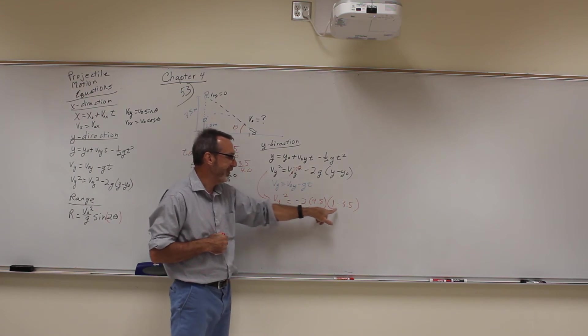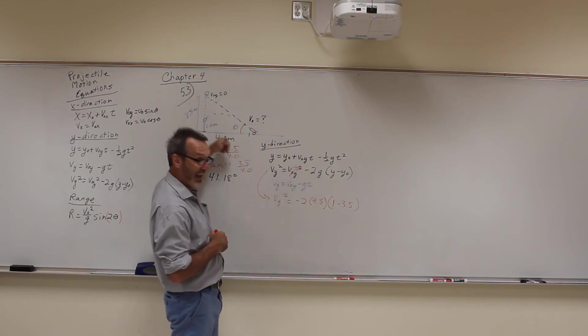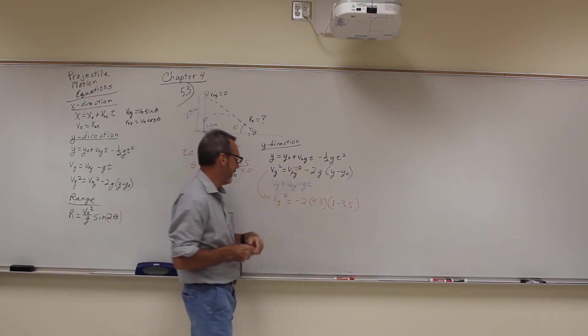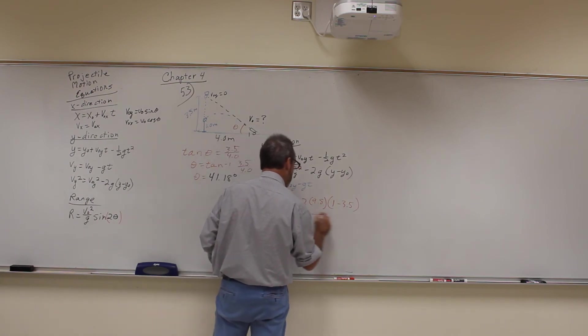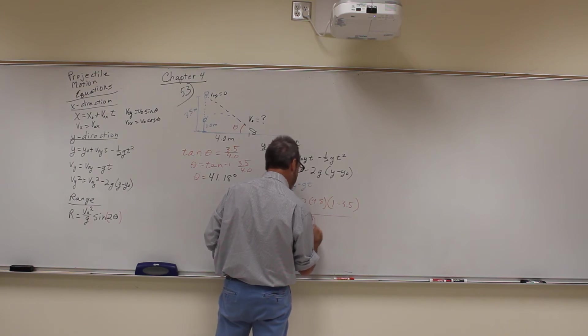This is going to be negative 2 because the ball is going down, and so the negatives are going to cancel out. So we're going to get Vy is equal to the square root of 2 times 9.8 times 2.5.